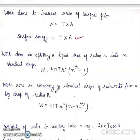Work done in combining n identical drops of radius small r to form a big drop of radius capital R. Work done will be 4 pi T r square into n minus n to the power 2 by 3.